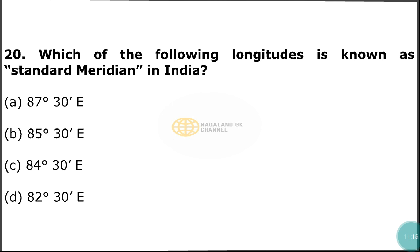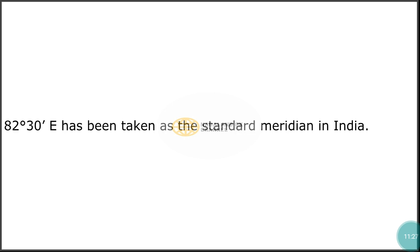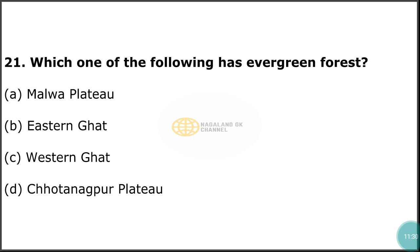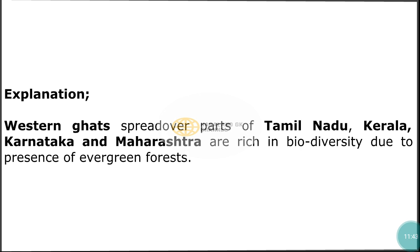Question number 20: Which of the following longitudes is known as the Standard Meridian of India? The correct answer is option D — 82.5 degrees East. Question number 21: Which one of the following has Evergreen Forest? The correct answer is option C — Western Ghats. Western Ghats, spread over parts of Tamil Nadu, Kerala, Karnataka, and Maharashtra, are a region of rich biodiversity due to the presence of Evergreen Forest.